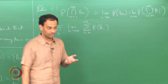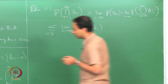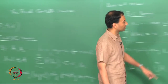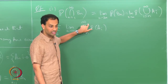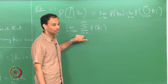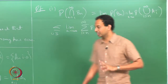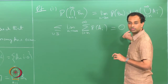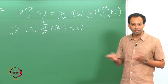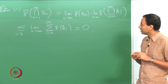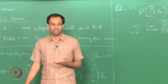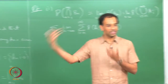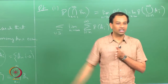Now the proof is almost over. The reason is I know that this summation is converging to something finite, and this quantity is the tail sum of a convergent series. As n goes to infinity the tail sum has to go to 0 — you know that from sequences and series. So this has to be equal to 0. I have proven that with probability 0, infinitely many A_n's will occur, which means with probability 1 only finitely many A_n's will occur — beyond a point, none of the A_n's will occur.